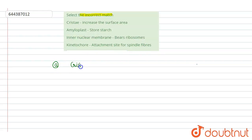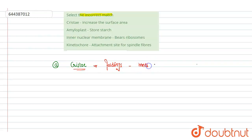Starting with the first one — cristae. Cristae are the foldings of the inner mitochondrial membrane. Mitochondria, as we all know, is the powerhouse of the cell. These are small foldings present on the inner membrane. The main purpose of cristae is to increase the surface area.